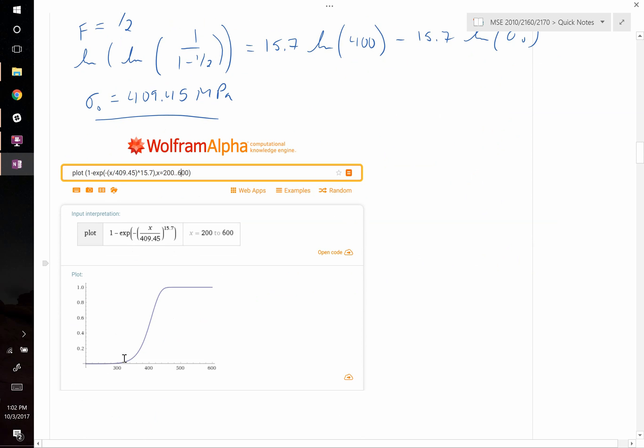And as you increase in stress, this is plotted in megapascals, by the time that you reach around 460 or so, you have almost all of your samples failing. And below say 300 MPa, you have very, very, very few samples failing. But it does not equal to 0. It is above 0 along here. It's just a very small number.